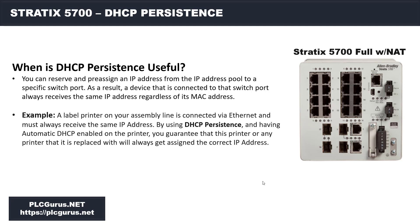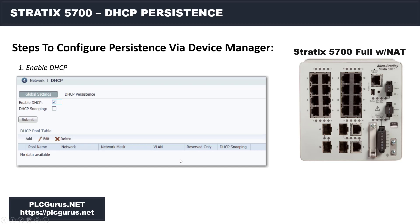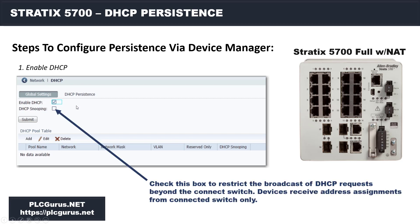Before we head over to the Device Manager and actually configure this, let's spend a couple of minutes looking at the actual setup of DHCP persistence and discuss a couple of the options we'll be presented with. To enable DHCP persistence, it's really nothing more than checking a checkbox — it's very easy to turn on. The other thing I want to talk about is DHCP snooping.